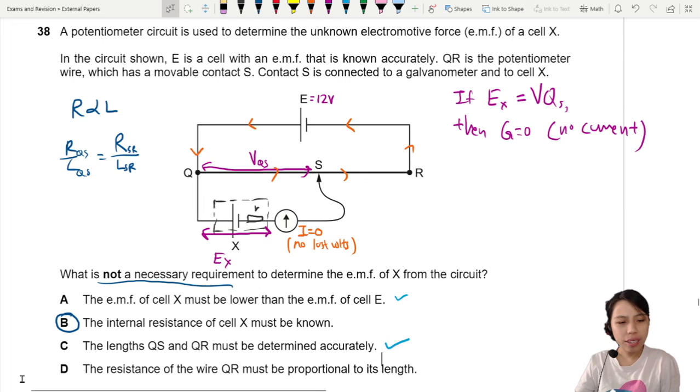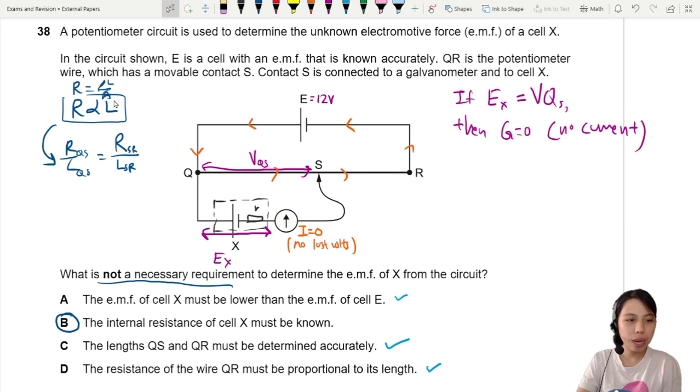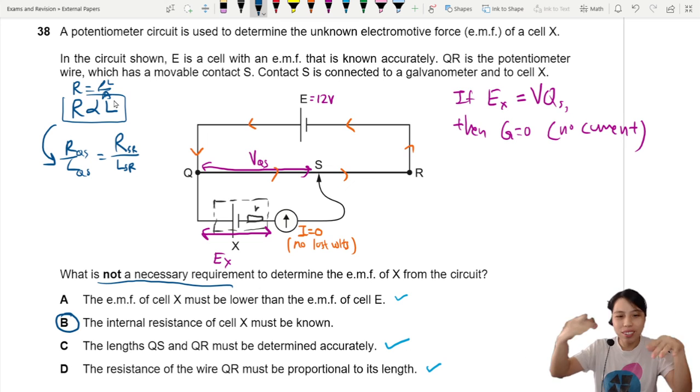D says the resistance of YQR must be proportional to the length. Yes, this one we need too. Because for us to assume these in the first place, it comes from the equation R equals RL over A. For us to get to this conclusion in order to come up with the ratio of lengths against resistance, we need that relationship to be true. You cannot have a thin wire and then thick wire and then the diameter keep changing.